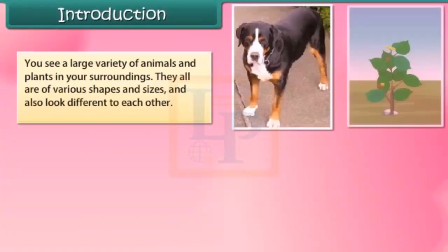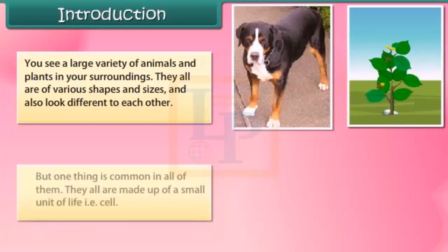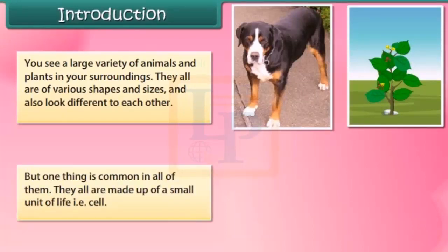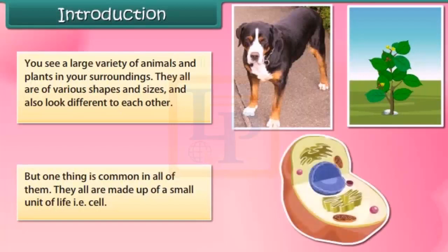You see a large variety of animals and plants in your surroundings. They all are of various shapes and sizes and also look different from each other. But one thing is common in all of them — they all are made up of a small unit of life, that is, the cell. So in this module we are going to learn about cell and its structure.